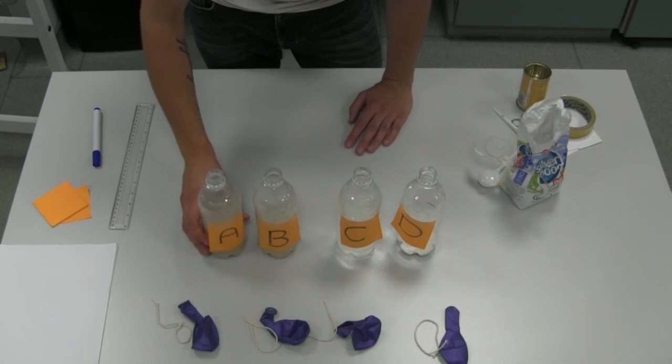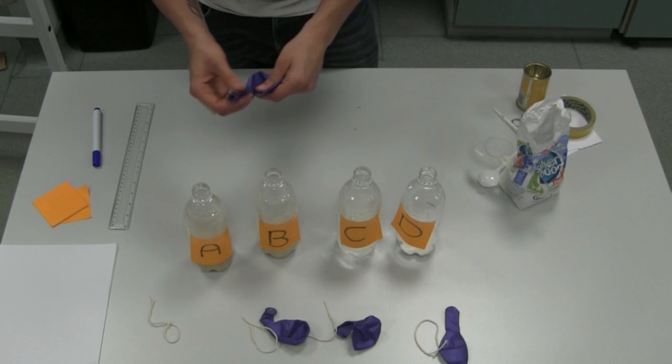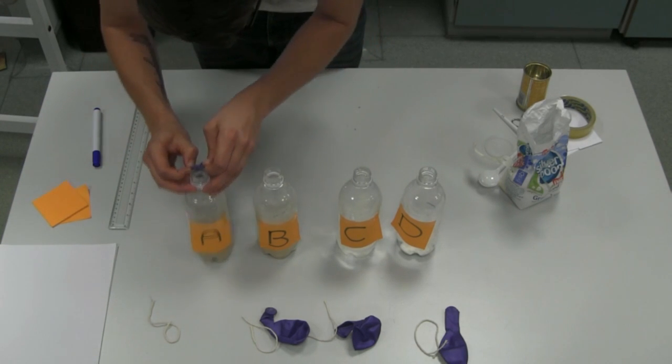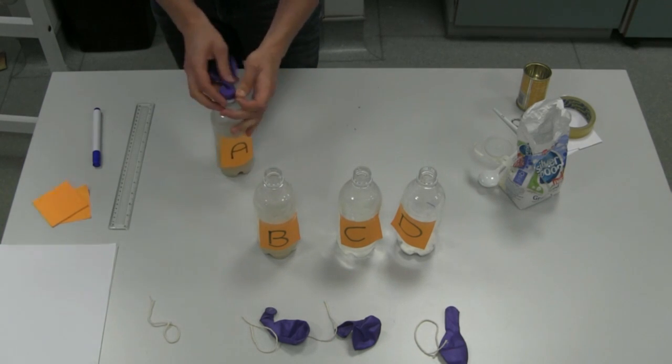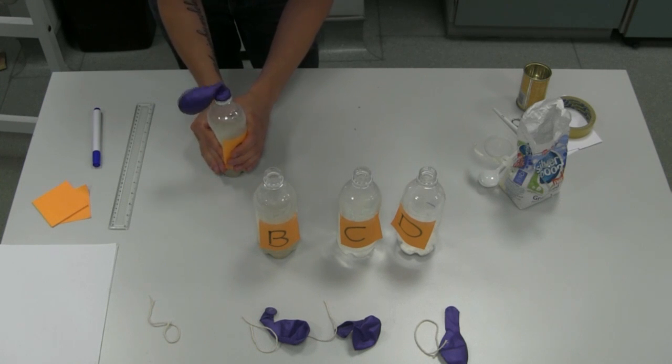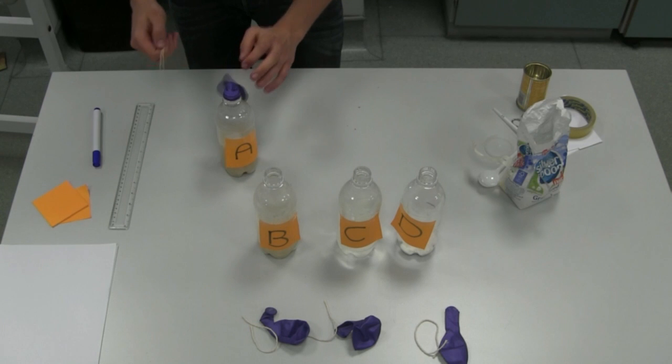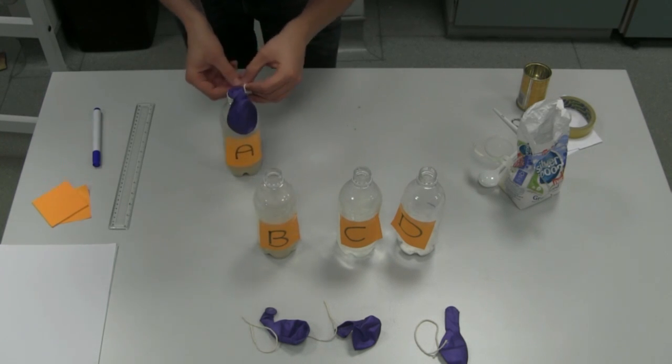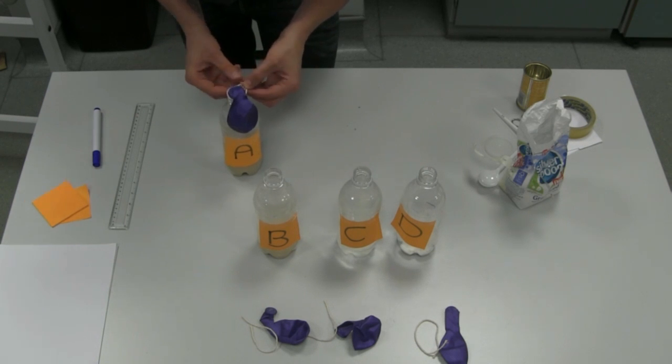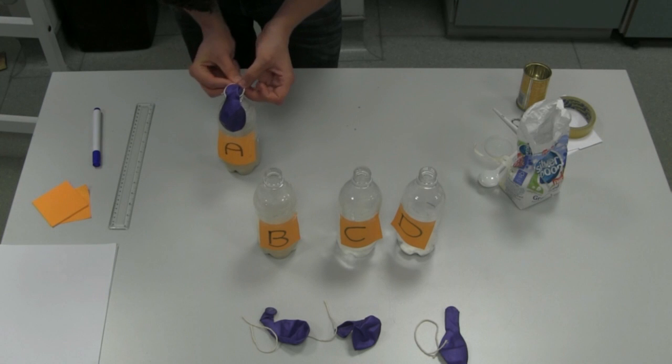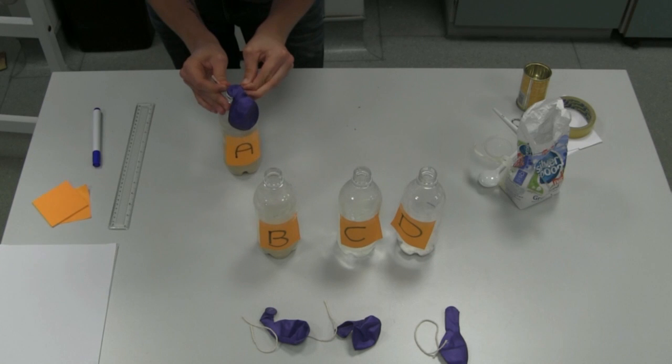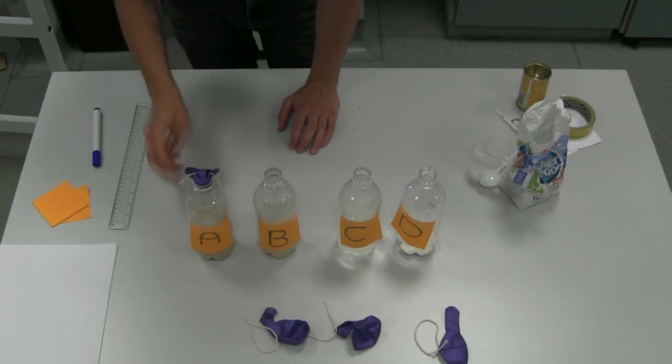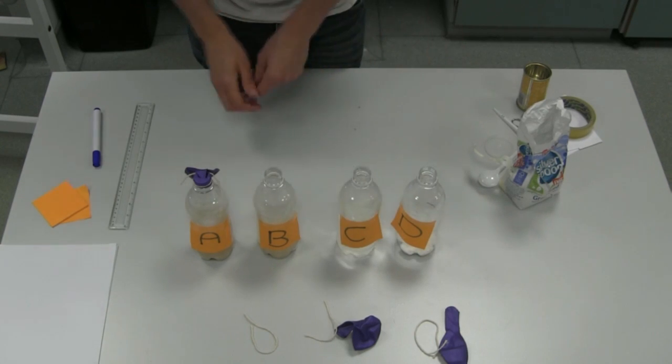Now comes the tricky part: attaching balloons. So, ensuring that you have 4 of the same balloons, give it a stretch and then pull them over the lid as far down as possible. And give it a squeeze to check the balloon inflates. Take a piece of string or an elastic band and tie it around the rim of the lid. Ensure it's airtight. And do the same for each of your bottles.